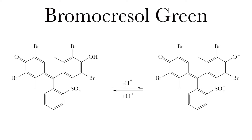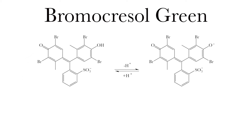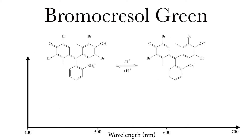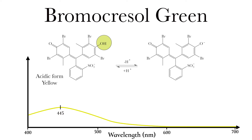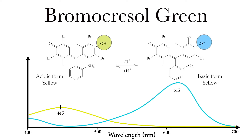Today our indicator is going to be bromo-cresol green. We use this because we can exploit the fact that its acidic form absorbs most strongly at 445 nanometers, or its basic form absorbs most strongly at 615 nanometers.